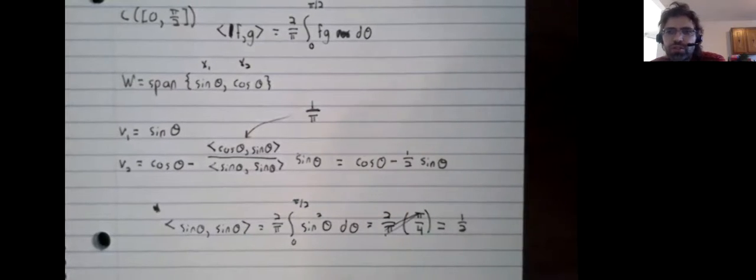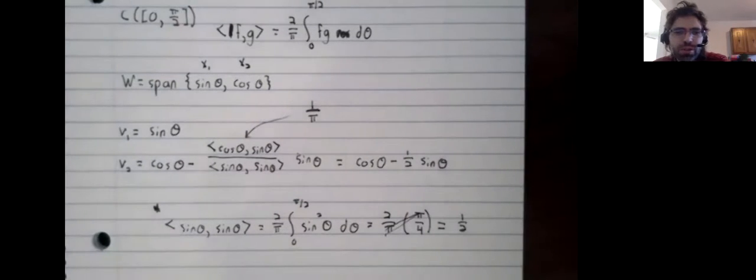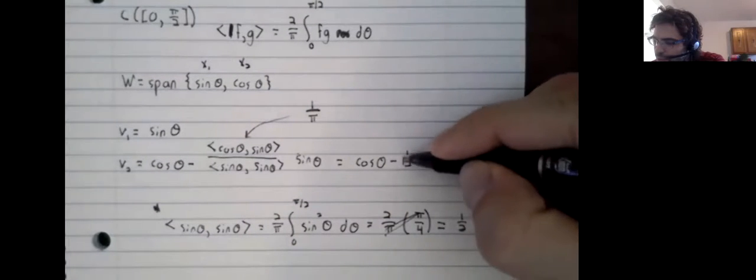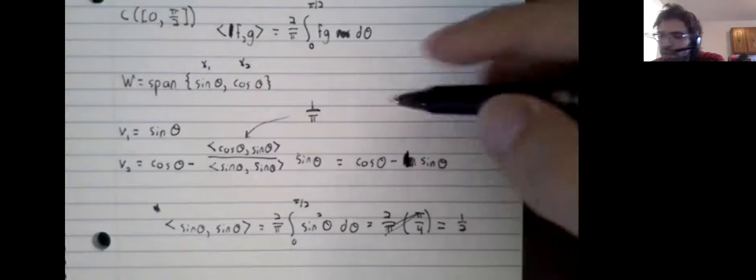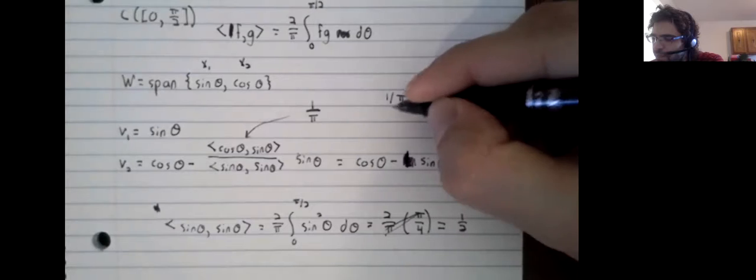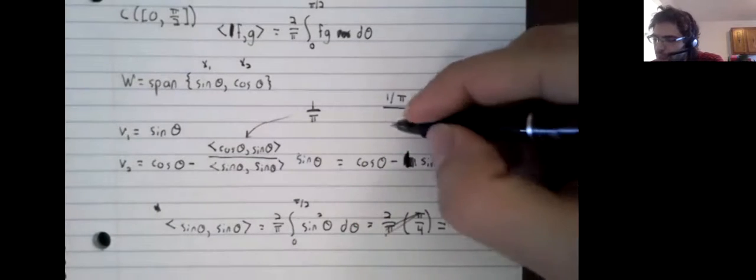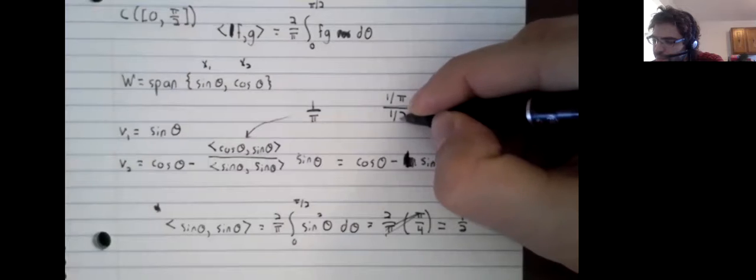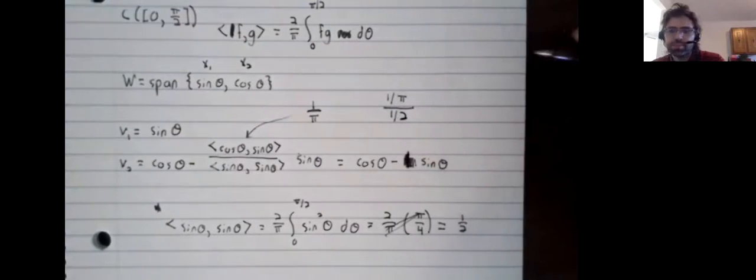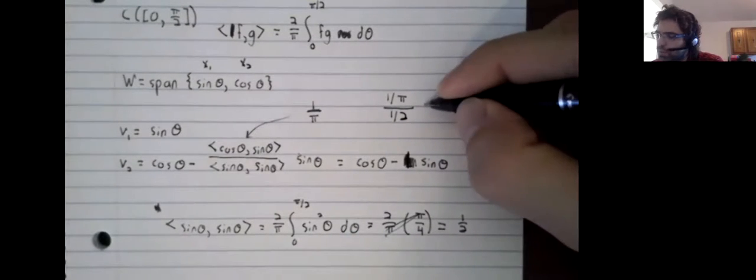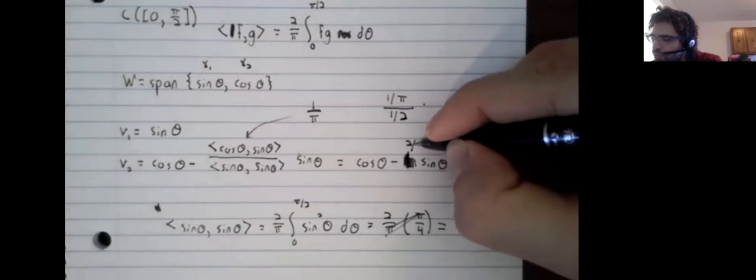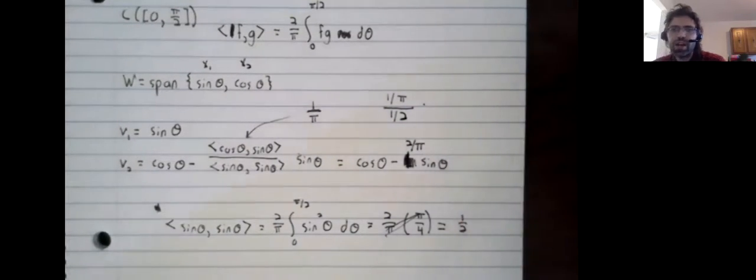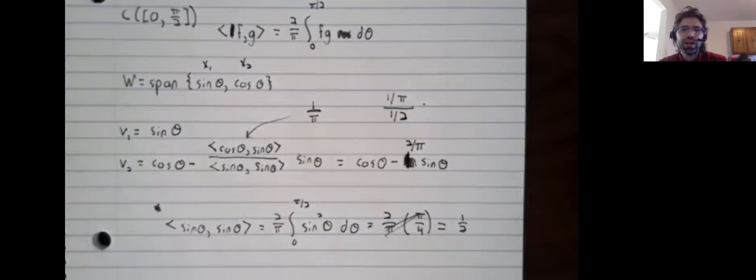So V2 is cosine of theta minus one half sine of theta. Sorry, no, I just went to check my work and it's a good thing I did. We've got this one divided by pi divided by one half, so that gives us two divided by pi.